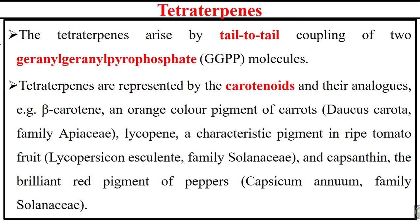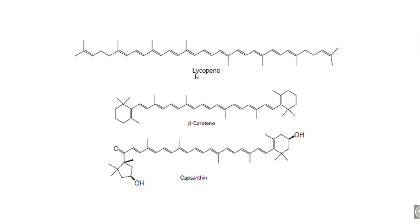Carotenoids are the orange-colored pigments of carrot. Lycopene is a tetraterpenoid and is the characteristic red pigment in tomato fruits. Capsanthin is also a tetraterpenoid — a brilliant red pigment from the Capsicum family. Beta-carotene is the most common carotenoid and is a major precursor for the synthesis of vitamin A, a diterpenoid.